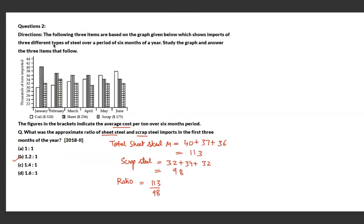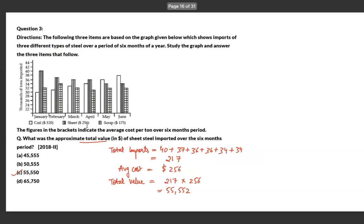The next graph shows different types of steel produced over six months. The first question asks for the approximate ratio of sheet steel to scrap steel imports in the first three months. Total sheet steel for those months is 113 thousand tons; similarly calculate scrap steel. The ratio works out to approximately 1.2 to 1.